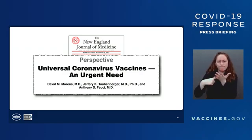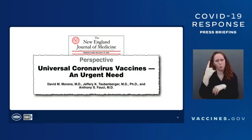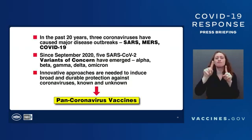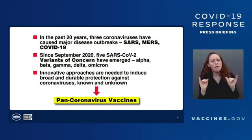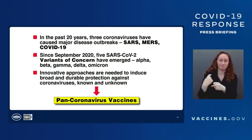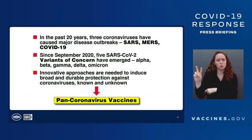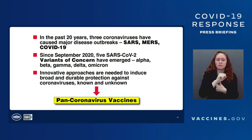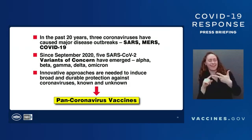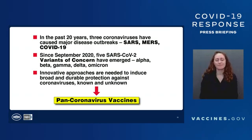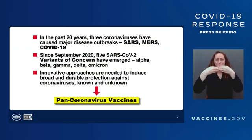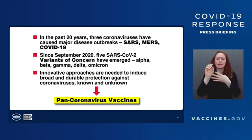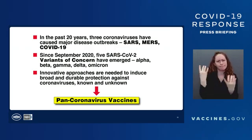A little bit over a month ago, my NIH colleagues and I wrote a perspective in the New England Journal of Medicine talking about the urgent need of a universal coronavirus vaccine. The reason we did this was to bring to the public's attention that over the past 20 years, since 2002, we've had three major coronavirus disease outbreaks: SARS, MERS, and COVID-19. Since September of 2020, there have been five SARS-CoV-2 variants of concern — Alpha, Beta, Gamma, Delta, and now the current Omicron. Obviously, innovative approaches are needed to induce broad and durable protection against coronaviruses that are known, and some that are even, at this point, unknown. Hence the terminology pan-coronavirus vaccine.